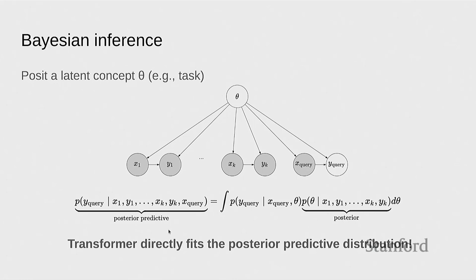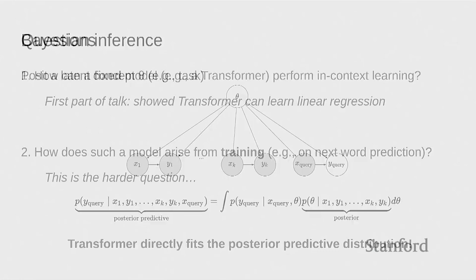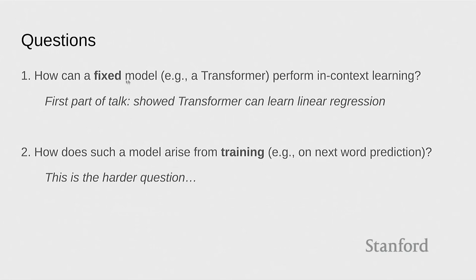So it's useful to think about this posterior predictive distribution — we're abstracting away from the architecture and just talking about the distribution. Our two questions were: how can a fixed model perform in-context learning, and how does this model arise from training? The first part of the talk showed empirical evidence that the transformer can do in-context learning in a fairly wide number of non-trivial settings when shown examples of the task. Now there's some extrapolation out of domain, but largely you're showing the transformer what linear regression looks like — and if you believe the transformer is a universal function approximator, given enough data, it should just work.